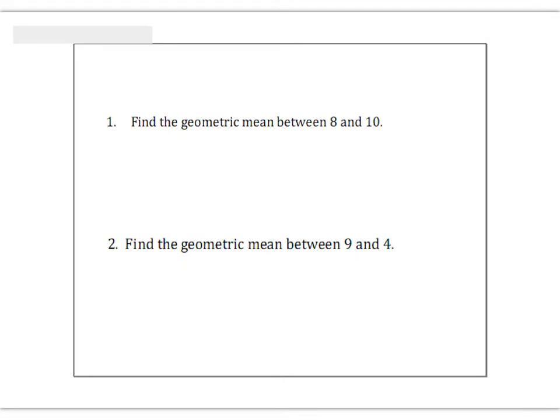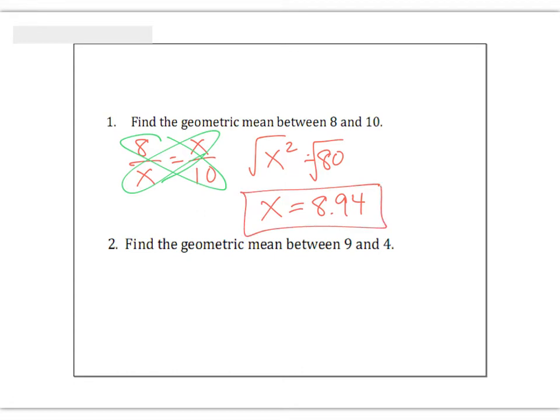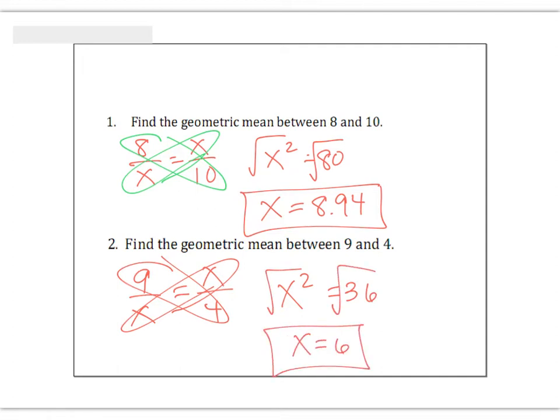If you want to find the geometric mean between 8 and 10, you just set it up like this: 8 over x equals x over 10, and you try to find that number that would balance out the equation. You use cross multiplication. X times x is x squared, 8 times 10 is 80. Take the square root and x equals 8.94 according to my calculator. Now you try the next one - find the geometric mean between 9 and 4. As you can see, the answer would be x equals 6.